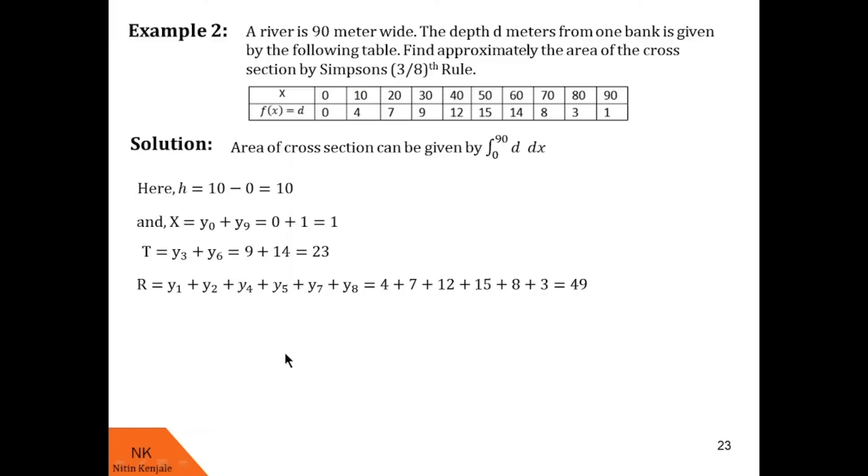Then by Simpson's 3/8th rule, we can have integral of d dx from 0 to 90 is equal to 3h by 8 into x plus 2t plus 3r. After substituting values of h, x, t and r over here, we get value of this integral to be 727.5 square meters. I hope you understood this word example. Now let us go ahead for last example.